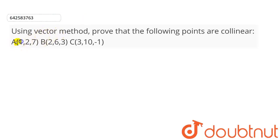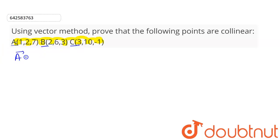Here we have to prove that the following points are collinear using the vector method. Let us determine the position vector for point A, point B, and point C. The position vector of point A: x coordinate is 1, so this will be i cap, and y coordinate is 2, so that means it will be plus 2 j cap.